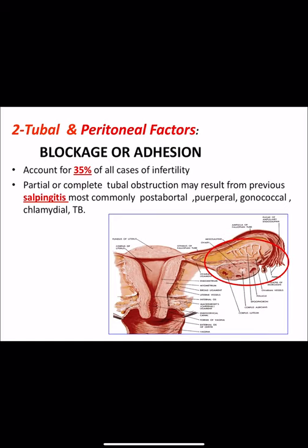The second cause of infertility is tubal and peritoneal factor — either blockage of the tube preventing sperm and the fertilized oocyte from passing through, or adhesions preventing the tube from picking up the oocyte. This accounts for 35% of all infertility cases and is the major cause in secondary infertility. Tubal obstruction may be due to infection (salpingitis from post-abortal, gonococcal, chlamydial, or TB infection), surgery, appendicitis, pelvic sepsis, endometriosis, or prolonged pelvic inflammatory disease.